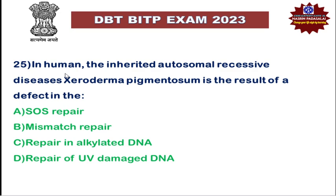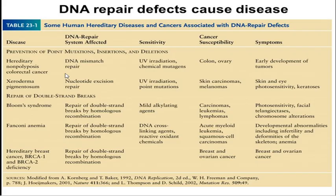Next: in humans, the inherited autosomal recessive disease xeroderma pigmentosum is a result of defective nucleotide excision repair. Persons with xeroderma pigmentosum are unable to repair DNA damage caused by ultraviolet radiation. Inherited non-polyposis colorectal cancer involves a defect in the DNA mismatch repair system, whereas xeroderma pigmentosum involves a defect in nucleotide excision repair. The DNA mismatch repair system corrects DNA damage caused by UV radiation and chemical mutagens, while nucleotide excision repair corrects DNA damage caused by UV radiation.